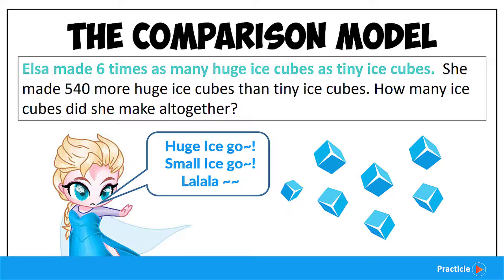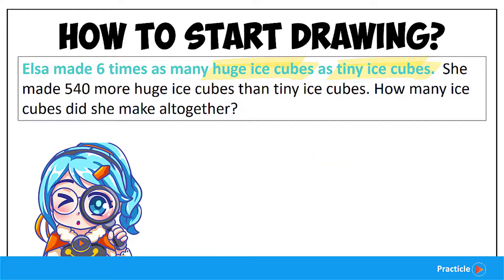Can you spot the objects we have here? We are looking at two types of ice cubes in this math question — the huge ice cubes and the tiny ones. Knowing the type of objects that we have is very important because it helps us to label our bar models clearly.